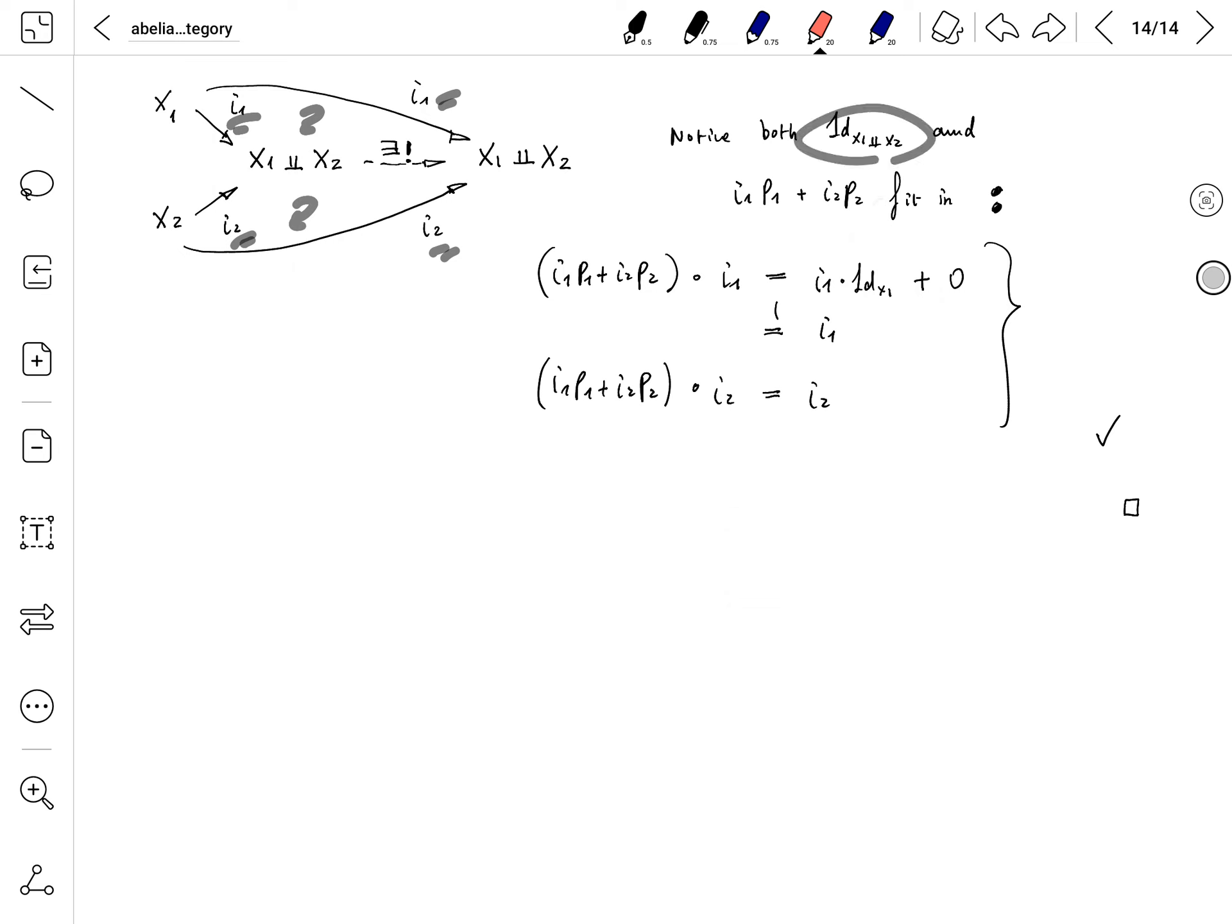But notice that I1 P1 plus I2 P2 also fits into the diagram. Because if you check, by how we defined P1 P2, this will be P1, which means this diagram still commutes. If you put this here, it similarly makes the second diagram commute. And so it also makes the diagram commute, but there is a unique morphism making the diagram commute. And this forces I1 P1 plus I2 P2 to equal identity. And so we are done.